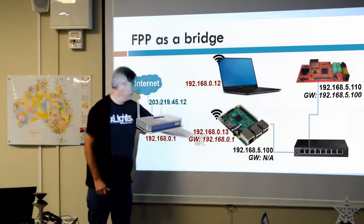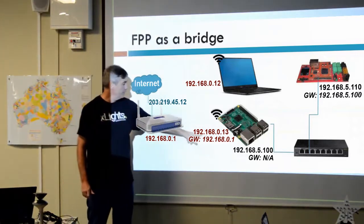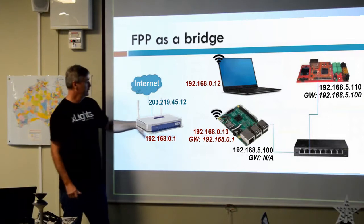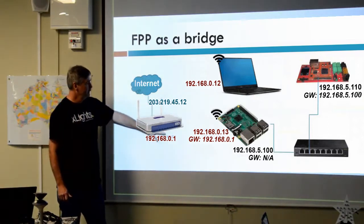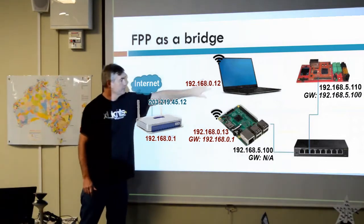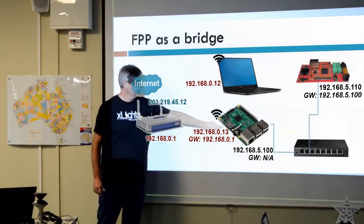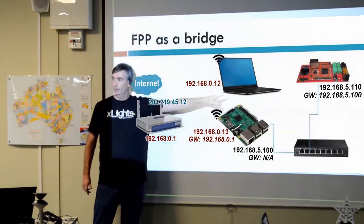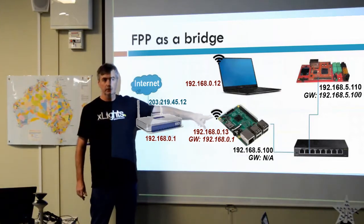The Pi is also connected via Wi-Fi sitting on my home network, 192.168.0, where my laptop is. This laptop can see the Pi, but it can't see the controller by default — not unless we do something special to make that work.